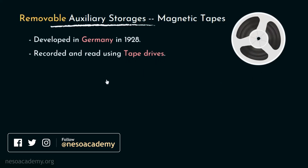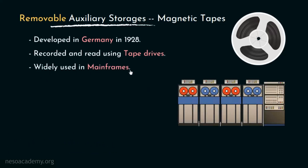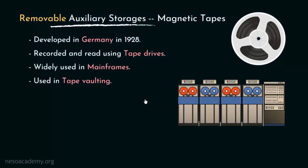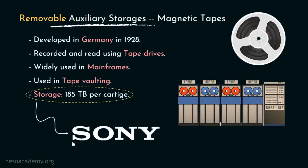Using these tape drives, digital data can be both recorded on and read from the magnetic tapes. Earlier, magnetic tapes were widely used in mainframe computers. Unlike audio and video cassettes, digital magnetic tapes are not completely obsolete yet — these are still used in tape vaulting. Tape vaulting is a process of backing up critical data in magnetic tapes. Big companies use this technology to back up their data off-site, mainly for analytical processing which helps companies take big decisions. This is a very cost-effective approach — we can store 148 gigabytes of data per square inch, amounting to 185 terabytes per cartridge. This storage capacity was achieved by Sony Corporation in the year 2014.